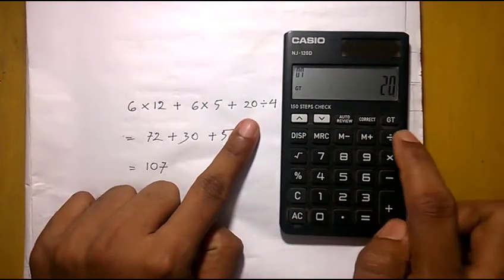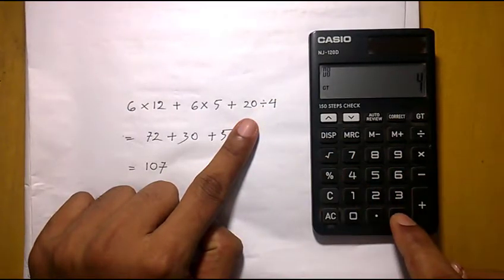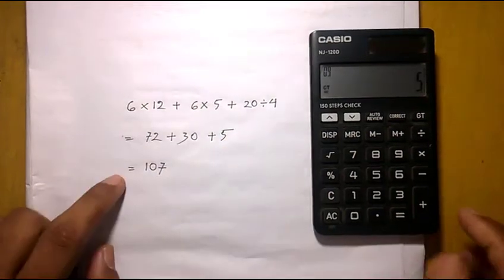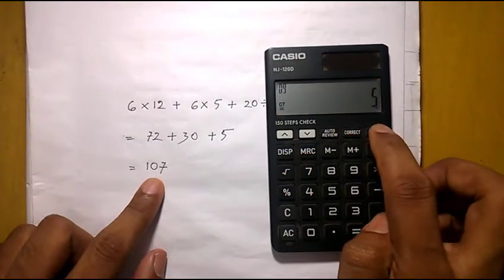20 divided by 4, 5. Now press the GTE button and you will see the result, 107.